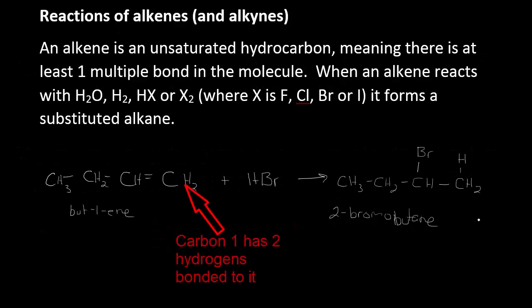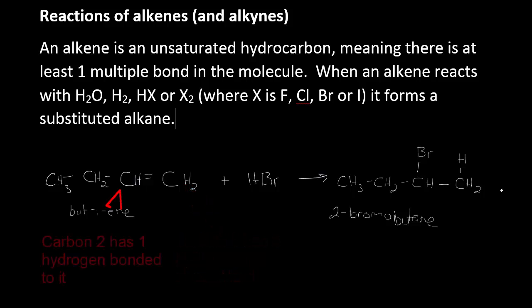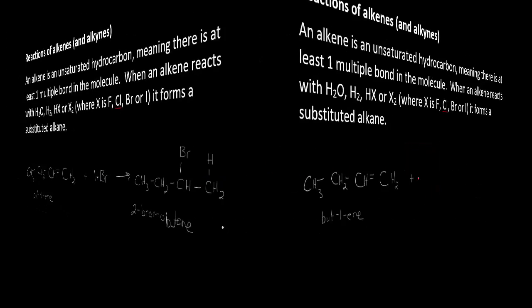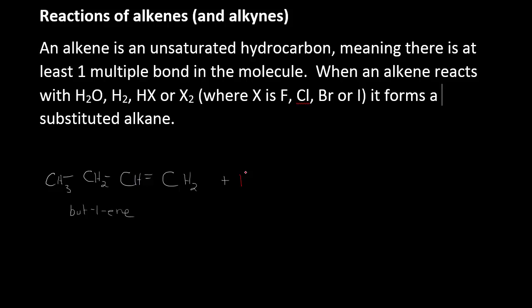Carbon 1 has two hydrogens bonded to it. Carbon 2 only has one hydrogen bonded to it. So where does the bromine go? Where does the hydrogen go? You can see that the bromine gets delivered to carbon 2 in this case. The hydrogen went to carbon 1. That's always the case.